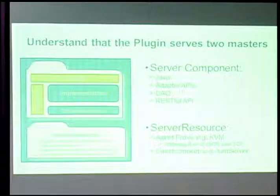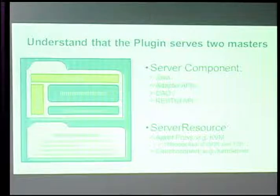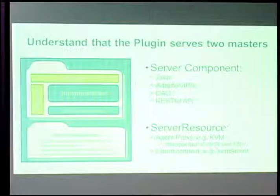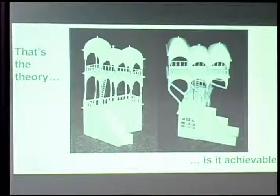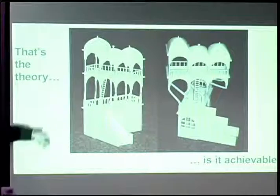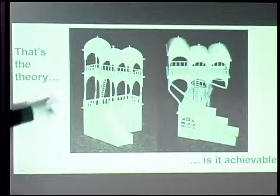The second part of the plugin is the server resource, responsible for managing resources out in your data center. It has a lot more implementation flexibility. For KVM, you control it using libvirt, which doesn't support remote invocations, so an agent is placed on the KVM server communicating back via a message bus — JSON over TCP. For XenServer, remote invocations are possible, so a direct-connect server resource lives inside the management server and calls out to hypervisors directly. That's the theory behind plugins.